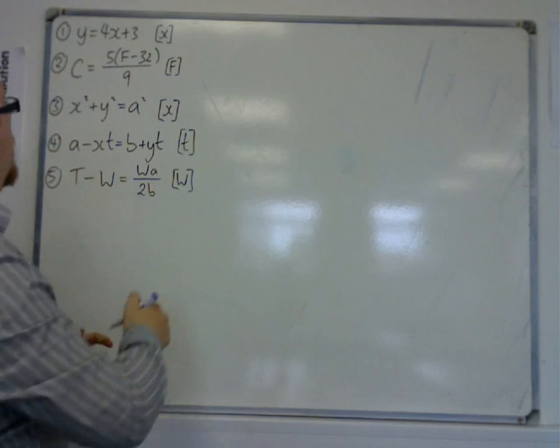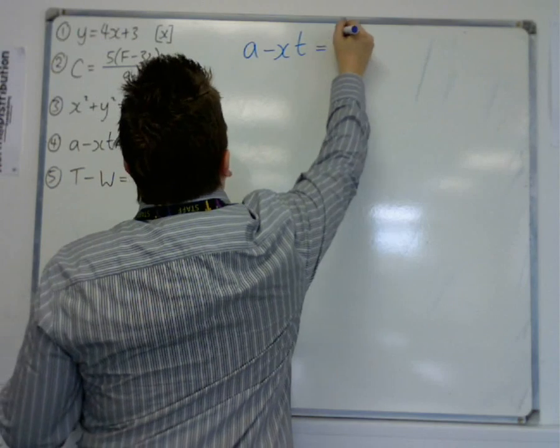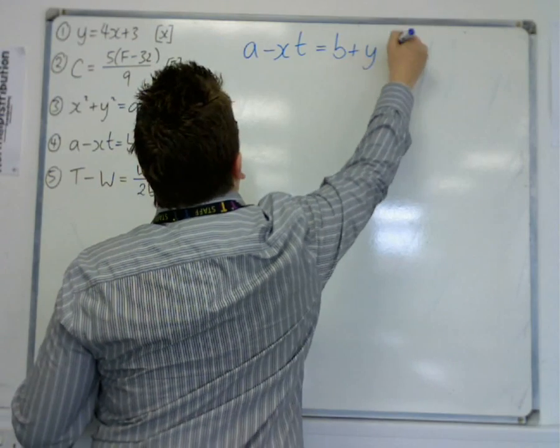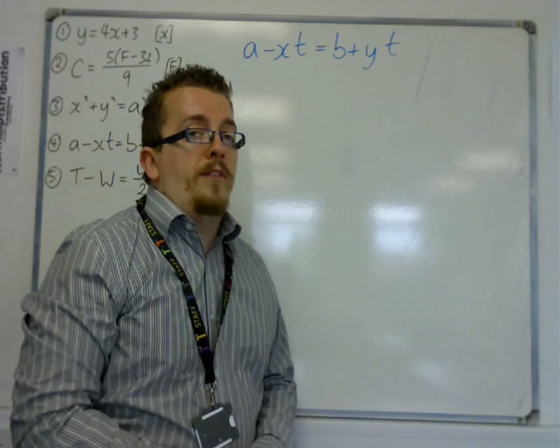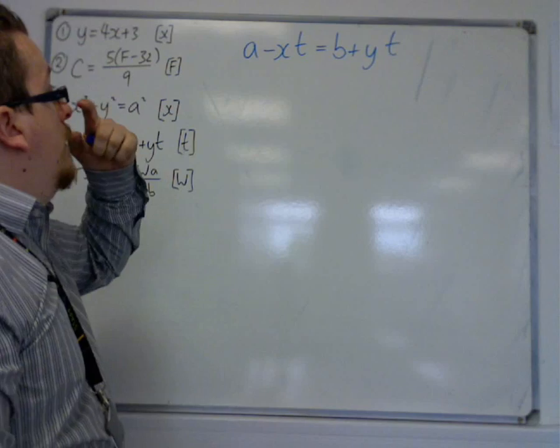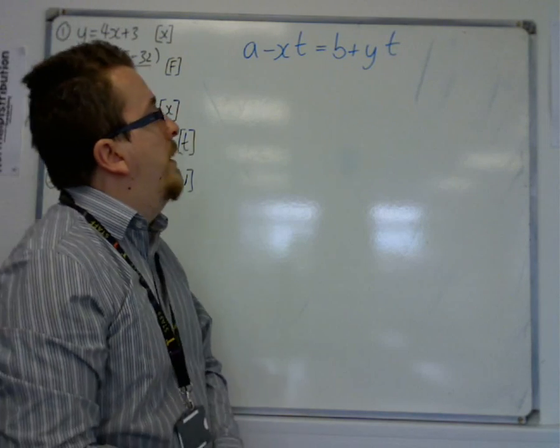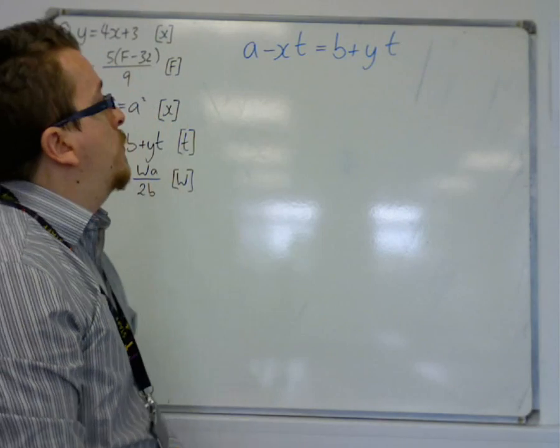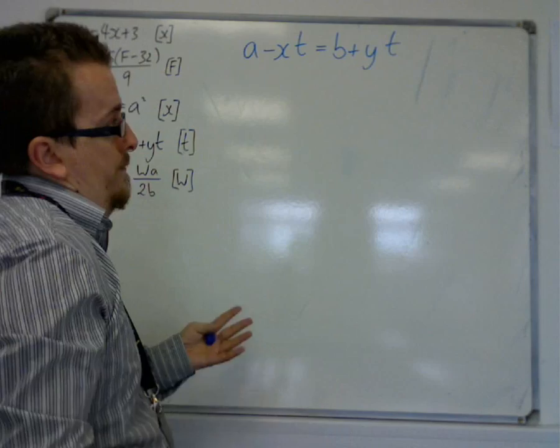The fourth one, a minus xt is equal to b plus yt. Now, there's going to be multiple ways of doing this. You need to make sure, what we want is we want t equals. So, we need all the t's on one side of the equation, and all of everything else on the other side, effectively.